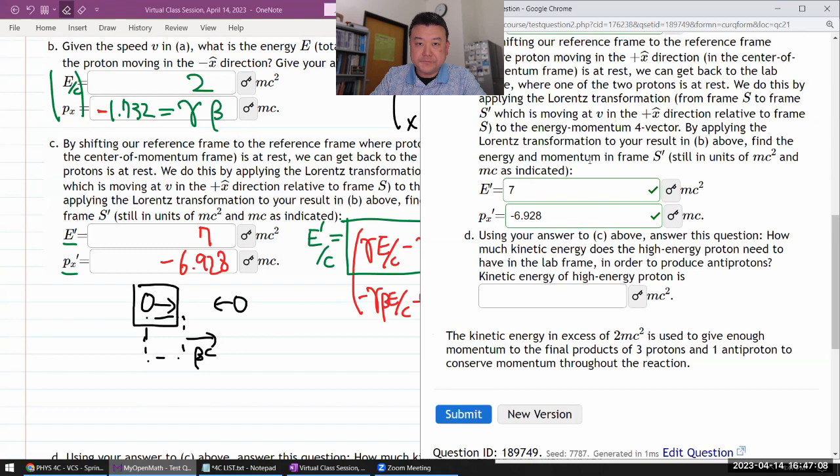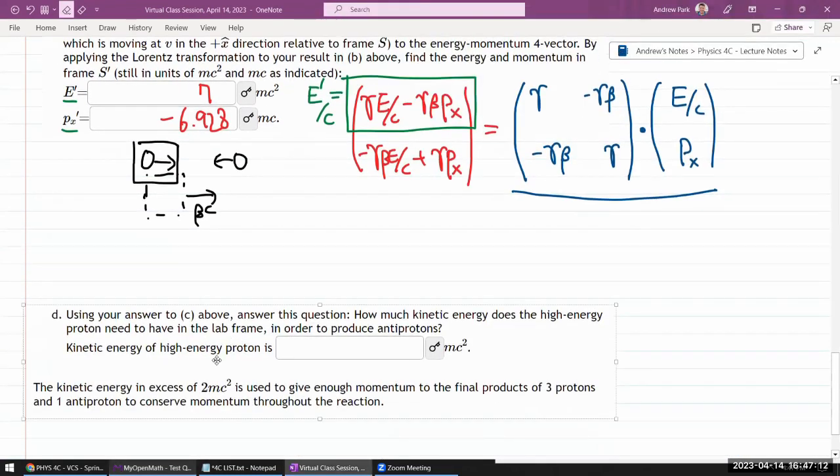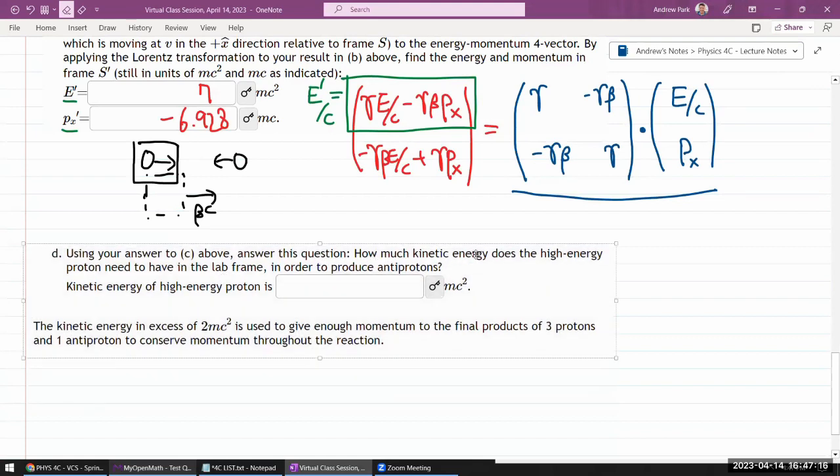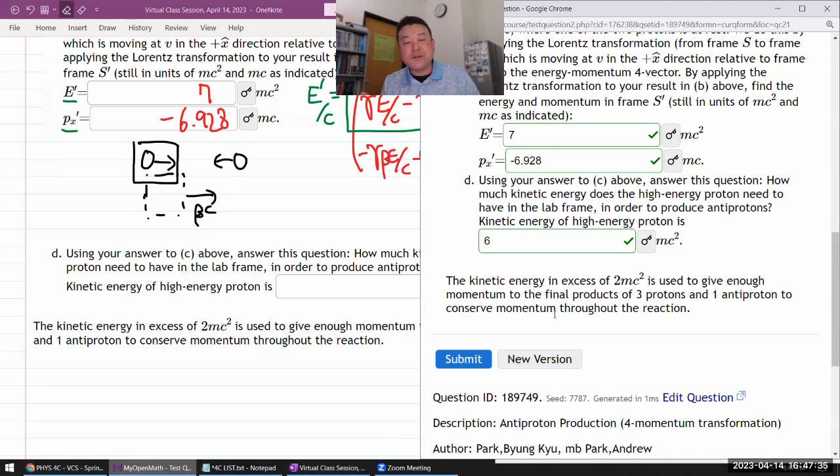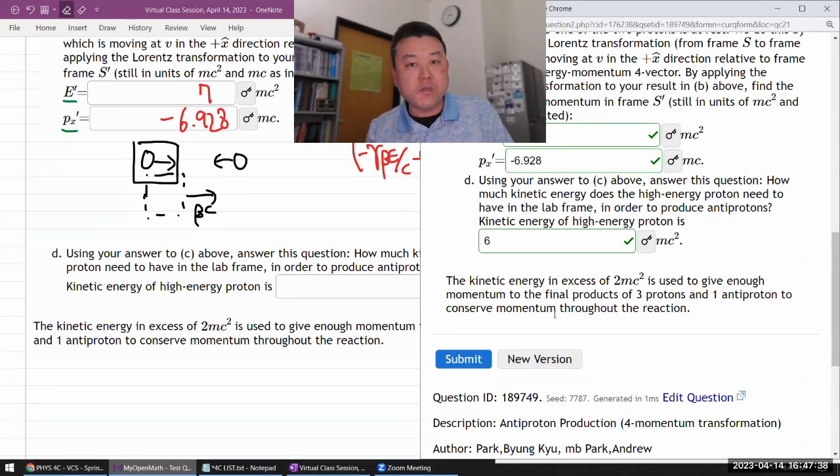Part D: How much kinetic energy does the high-energy proton need to have in the lab frame in order to produce the antiprotons? That's easy, I can take that and subtract one. If you weren't worried about conserving momentum, you might have thought 3mc² would be enough, but because you need to conserve momentum, you need to double that. In the lecture I gave some example of trying to compare the LHC collider collisions with collisions with cosmic rays.